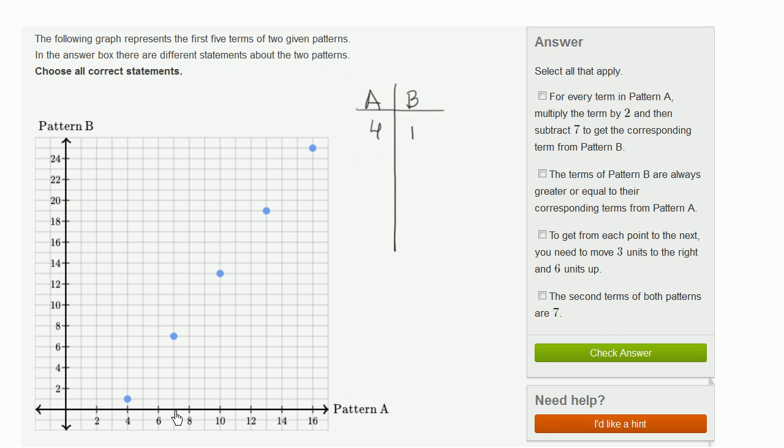So we have pattern A and then we have pattern B. The first term for pattern A is 4, and when pattern A is 4, the first term for pattern B is 1. The second term for pattern A is 7, and when pattern A is 7, pattern B is also 7. Third term, pattern A is 10 and pattern B is 13. And then fourth term, pattern A is 13 and pattern B is 19. And then finally, fifth term, pattern A is 16 and pattern B is 25.